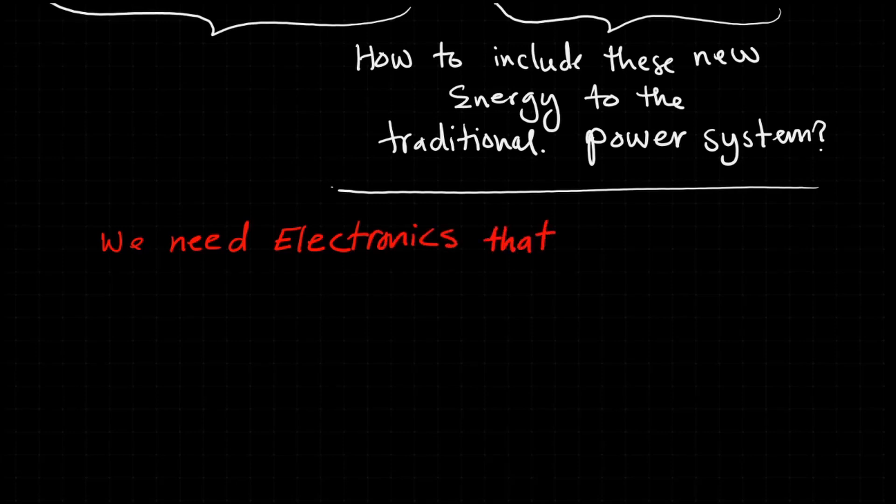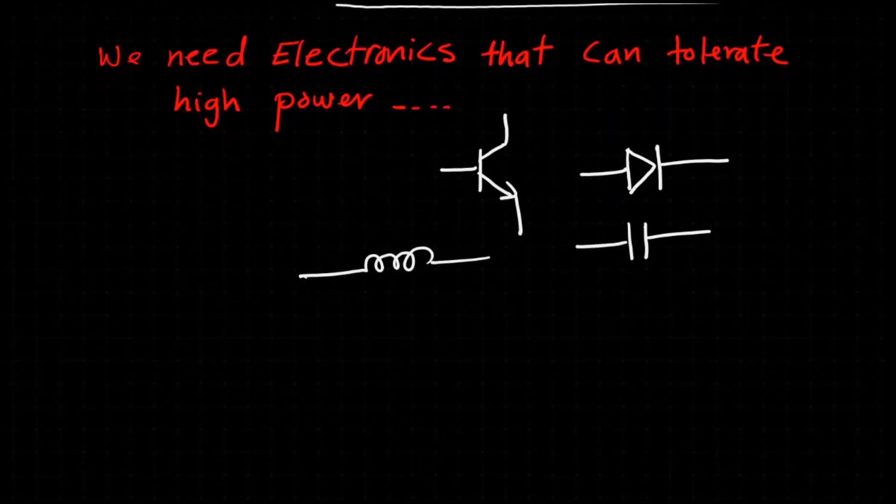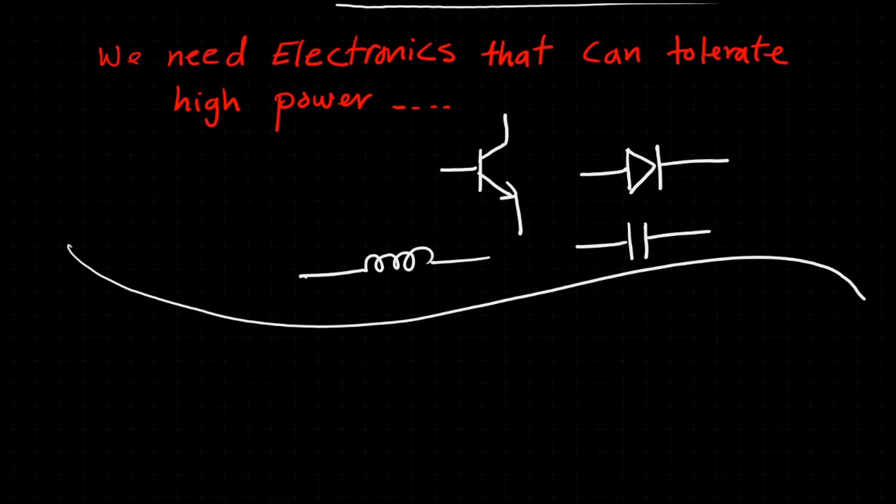When we think about electronics devices, transistors, diodes, and passive components come to our mind. Yes, power transistors which are different than normal transistors and power diodes which are also different than normal diodes. Also, the inductors must tolerate high current and the capacitors must be able to handle high voltage levels.